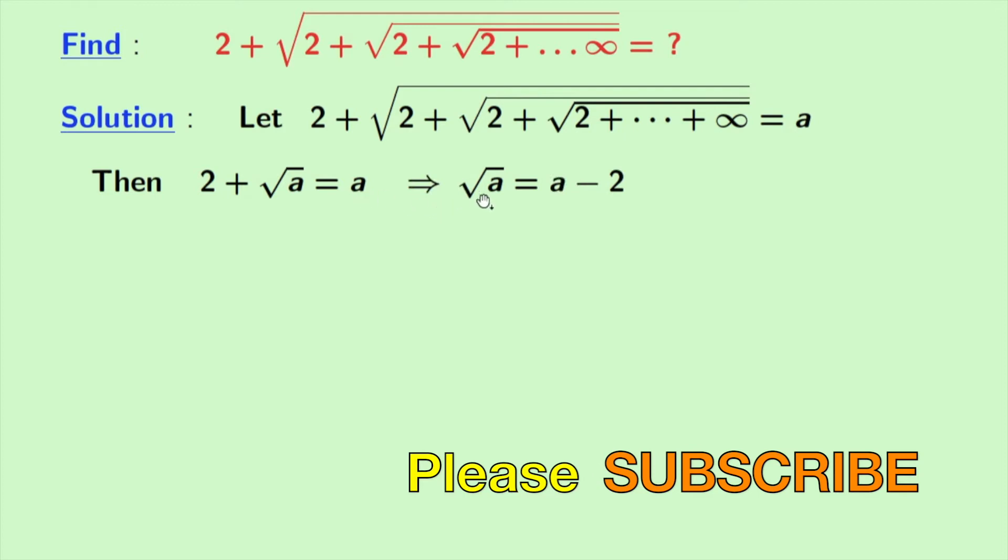Now we get square root of a is equal to a minus 2. Now we will square the both side.